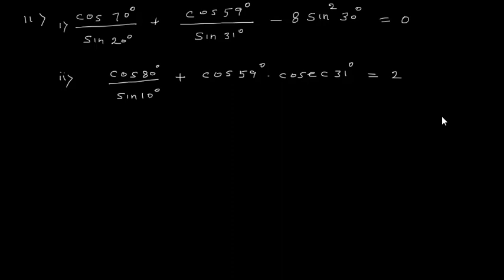Namaste everyone, welcome to the class. Now let us see the 11th problem. Here we have to prove that cos²70° / sin20° + cos59° / sin31° − 8sin²30° = 0.